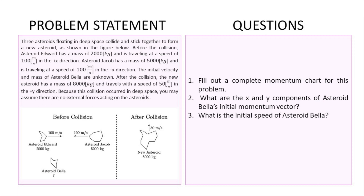The problem goes as follows: we have three asteroids floating in deep space — they collide, stick together, and form a new asteroid as shown in the figure. Before the collision, asteroid Edward has a mass of 2000 kg and is traveling in the x-direction. Asteroid Jacob has a mass of 5000 kg and is traveling at a speed in the opposite direction. The initial velocity and mass of Bella are unknown. After the collision, the new asteroid has a total mass of 8000 kg and travels at 50 m/s in the y-direction. Because the collision happened in space, you may assume there are no external forces acting on the asteroids.